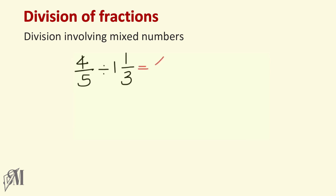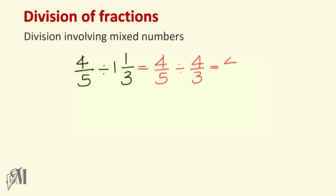Four over five divided by one and one third: write four over five as it is. Convert one and one third into an improper fraction — that becomes four over three. Then convert to multiplication: four over five multiplied by three over four, the reciprocal. The fours cancel, so our final answer becomes three over five.